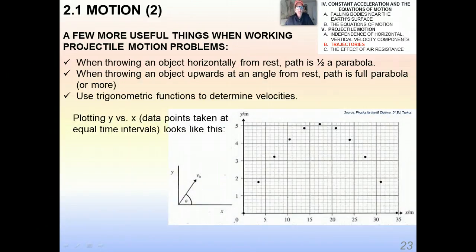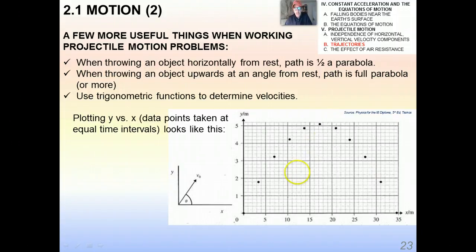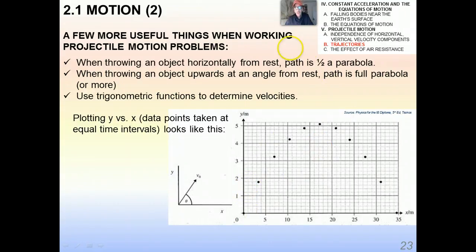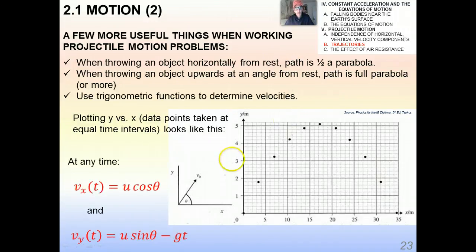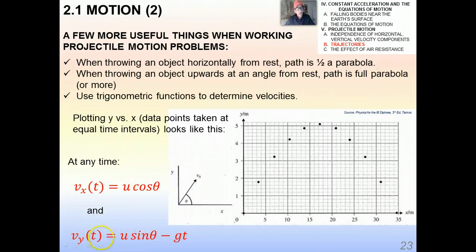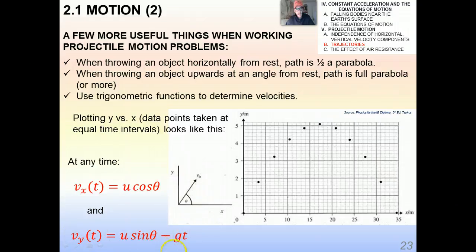Now, if I plot y versus x, or in other words, vertical displacement against horizontal displacement at equal time intervals, it looks like this. This is a parabola—this is the equation of the parabola I just showed you in that first slide, when I derived it by putting t from equation 2 into equation 1. At any time, v_x is a function of t, and that's u cosine theta, because that's the x component of the initial velocity. And of course, using the equations of motion, the vertical velocity at any time is u sine theta minus gt, and that's an application of one of the equations of kinematics.